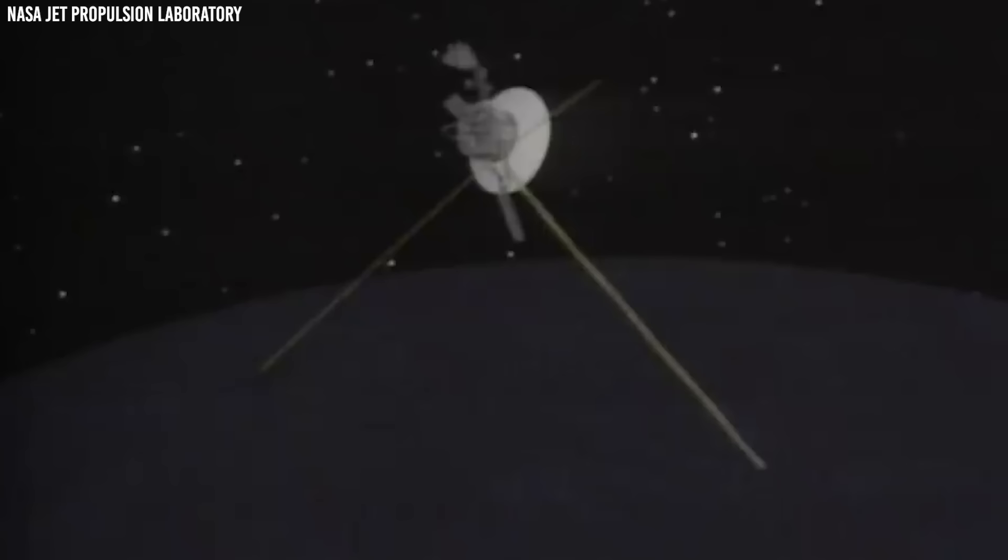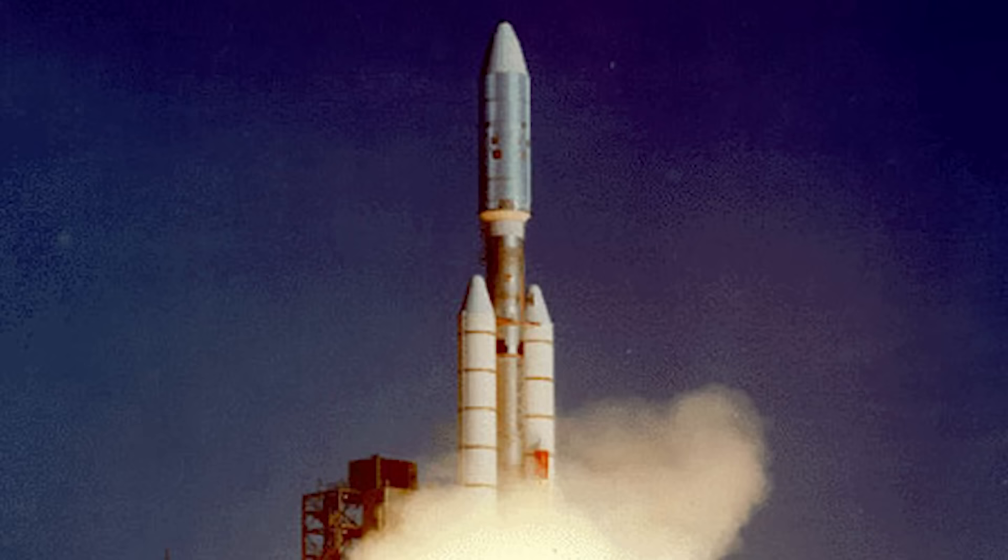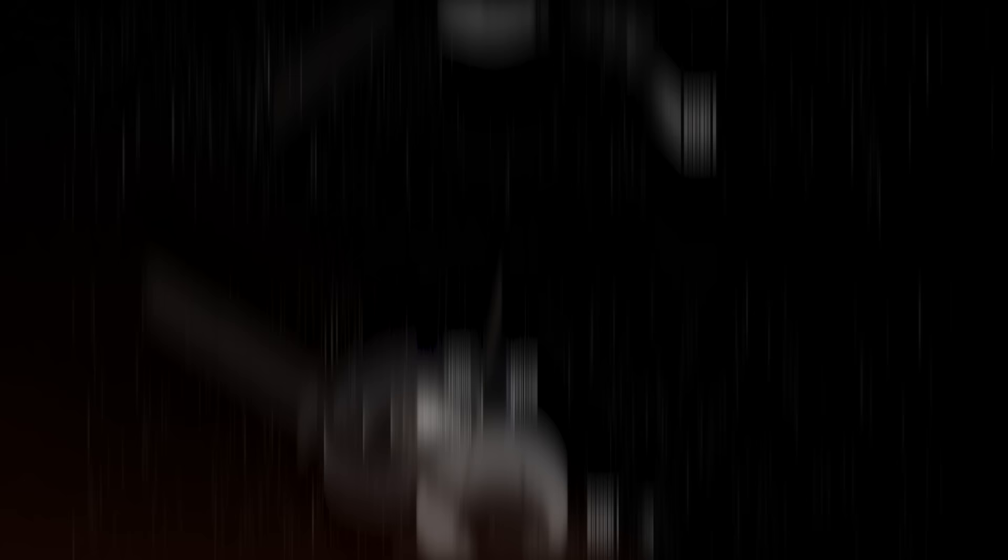Voyager 2 completed flybys of Jupiter, Saturn, Uranus, and Neptune, while Voyager 1, staying close to Jupiter and Saturn, almost faced a significant setback during its launch. Its rockets came within 3.5 seconds of running out of fuel. However, the probe successfully entered space and swiftly outpaced its twin, passing through the main asteroid belt between Mars and Jupiter before Voyager 2.